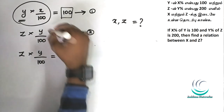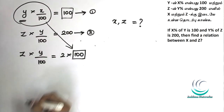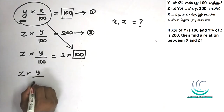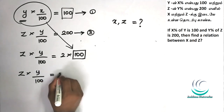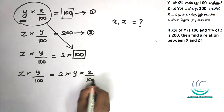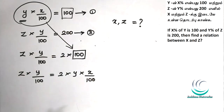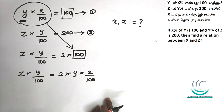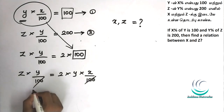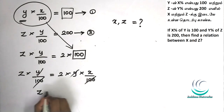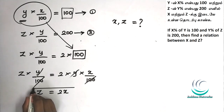So if you want to apply this value: Z into y by 100 equals 2 into y into x by 100. We will simplify it. So 100 and 100 will cancel. Y and y will cancel. What remains is z equal to 2x. So this is the relation.